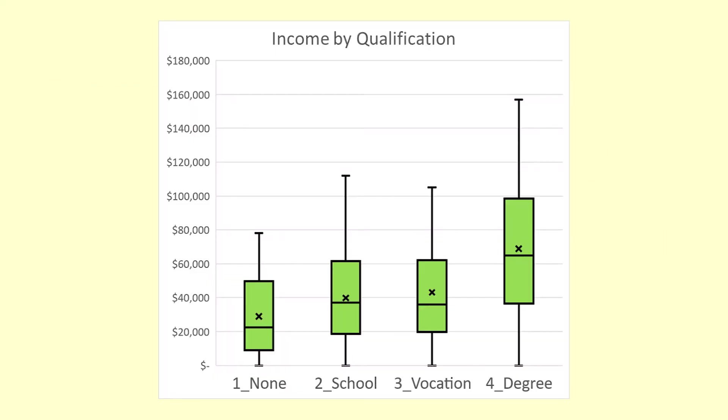Clearly the means in the sample are different. What we want to know is if that difference is likely to happen simply by sampling variation, by chance, or is there evidence that there is a difference in the means between the groups in the population from which the data is drawn?